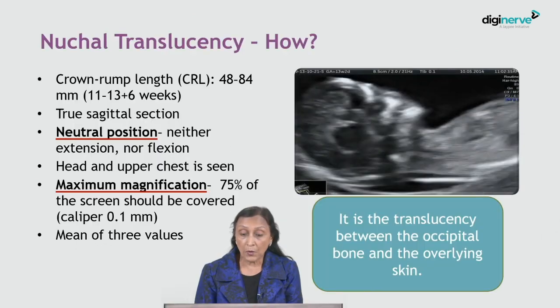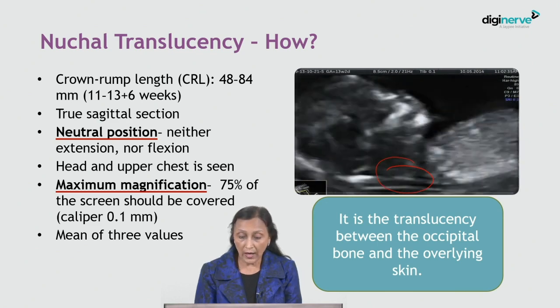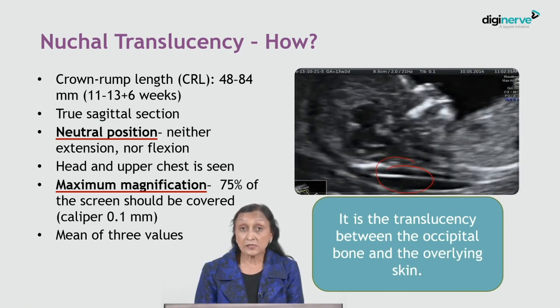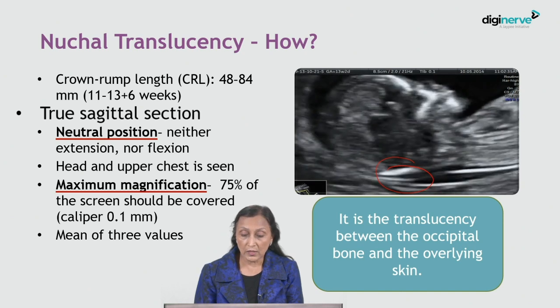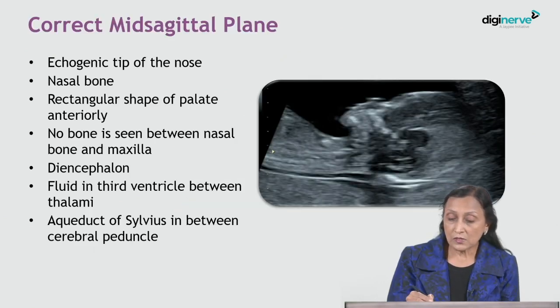It is very important to understand that we are measuring the translucency — the black part between the occipital bone and the overlying skin — and the skin is not included in the measurement. To confirm it is a true midsagittal section, you must see the nasal tip, the skin of the nose, and the nasal bone.